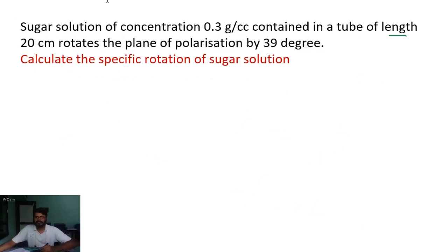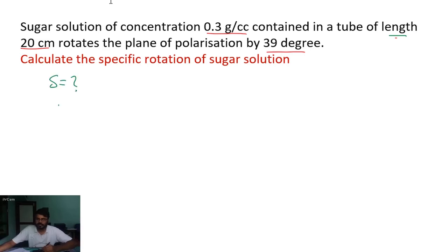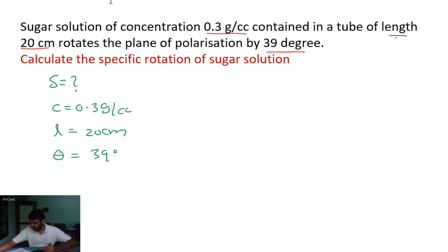Next question: a sugar solution of concentration 0.3 grams per cc is contained in a tube of length 20 centimeters and rotates the plane of polarization by 39 degrees. Calculate the specific rotation of the sugar solution. We need to determine S. Given: concentration c equals 0.3 g/cc, length l equals 20 cm, and rotation angle theta equals 39 degrees.